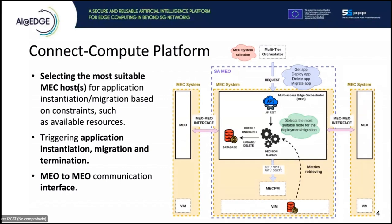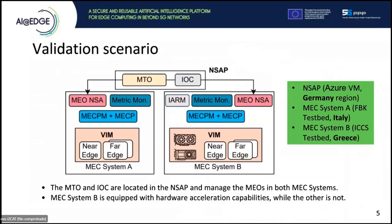The non-standalone can also trigger instantiation, migration, and termination. Now that we've finished the recap, this is the validation scenario we're going to showcase. We'll use the non-standalone in order to demonstrate all the end-to-end functionalities of the architecture. We have three different modules: the ENDS-UP, MEC system A, and MEC system B. The ENDS-UP is located in an Azure VM in the Germany region, and each MEC system is located in one of the partner testbeds — one in Italy and one in Greece. The MTO and IOC are located in the ENDS-UP, managing both MEC systems. MEC system B has the iARM because it has hardware acceleration capabilities, while MEC system A does not.